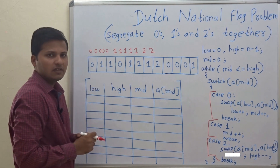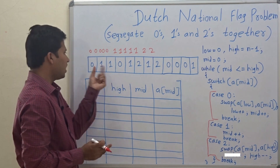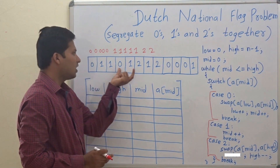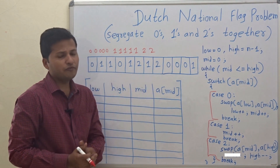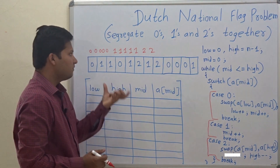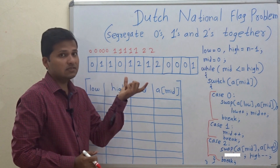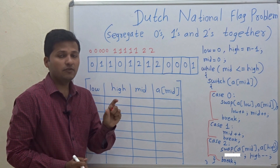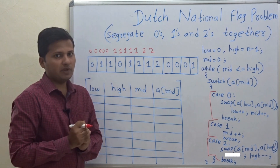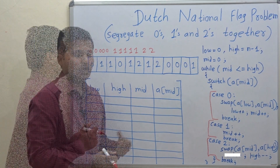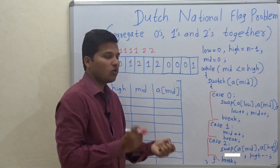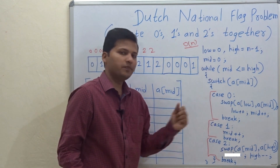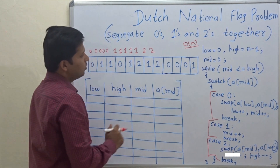Now you might say it is very easy — just count the number of zeros and put them at the beginning of the array, then count the ones and twos. But we have to do this with the least time complexity; we need to write an efficient solution. The solution that takes only O(n) time complexity is here.